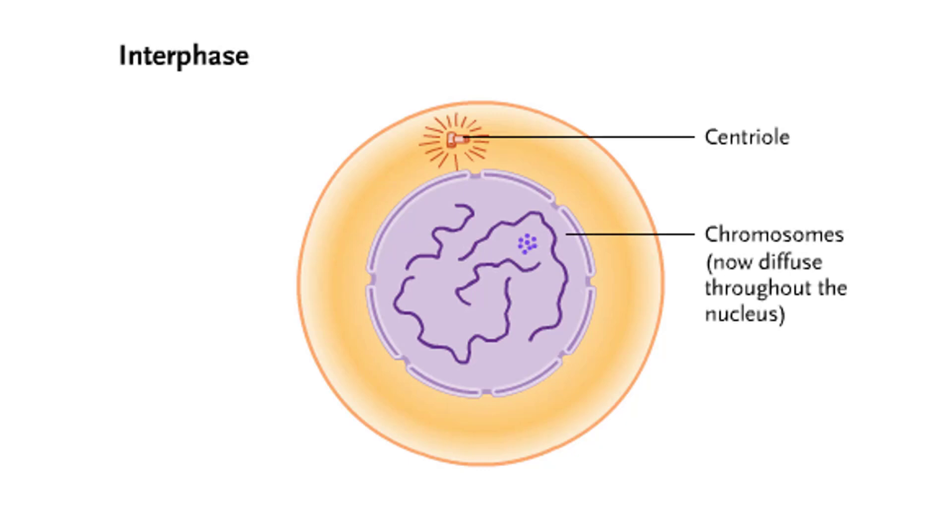During interphase, the chromosomes will be duplicated in preparation for mitosis, which divides the chromosomes, and cytokinesis, which divides the cell's cytoplasm.